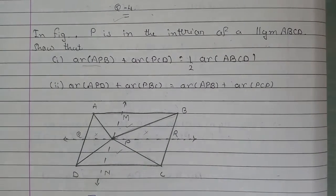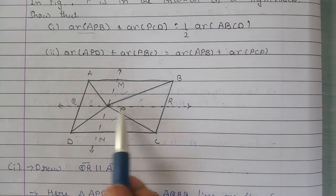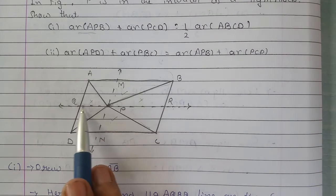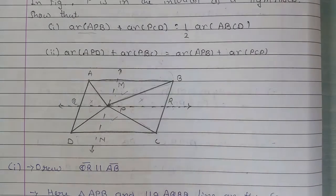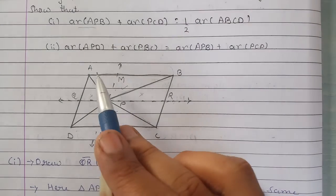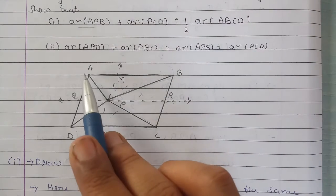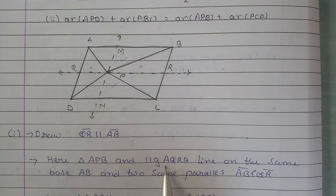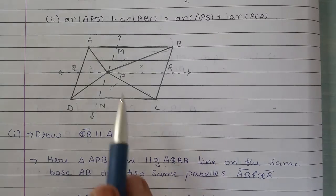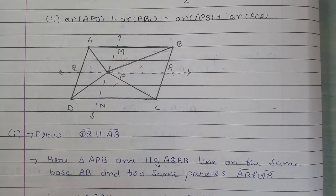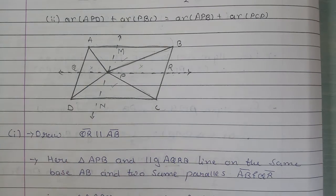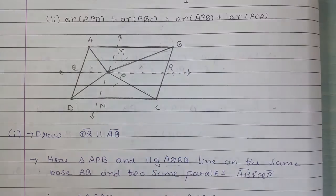Let's start working. Sabse pehle ek kaam karte hain — hum log draw karte hain QR, which is parallel to AB. Ab ye QR draw karne ki wajah se hamare paas ho gaya hai triangle APB aur parallelogram AQRB, jo AB aur QR parallel lines ke beech mein hain, aur dono ka base AB same hai. Yani APB ka area AQRB se half hoga.